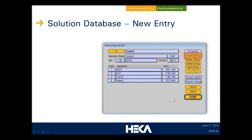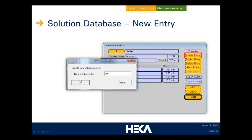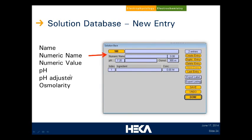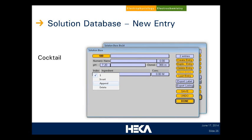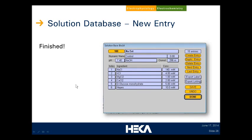To create a new entry, simply click 'create entry.' We give it a solution index — you want to try to keep numbers consistent for similar solutions for easier reference. There is no predefined convention; that's up to you. Then we specify name, value, pH, and so forth. Finally, we go in and insert each ingredient using the commands here to insert, append, or delete an ingredient. Once we have that, we are ready to go.